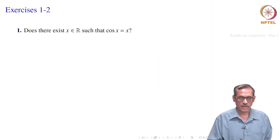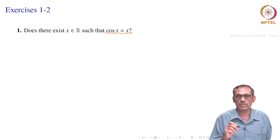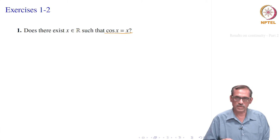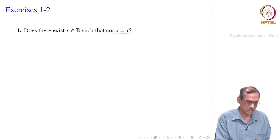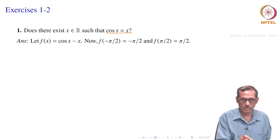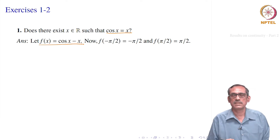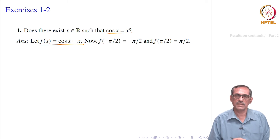Let us take a problem. The question is: does there exist a real number such that cos(x) = x? You can see this from the graph of cos(x) and the line y = x. But let us see how to do it analytically. In such problems, we define f(x) = cos(x) − x and see whether there is a point where f equals 0. To apply the Intermediate Value Theorem, we check whether this function takes a negative value and also a positive value.